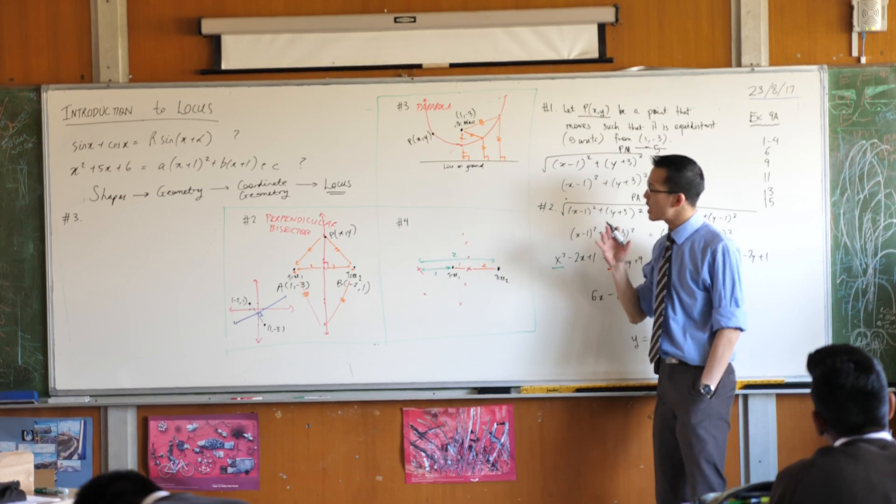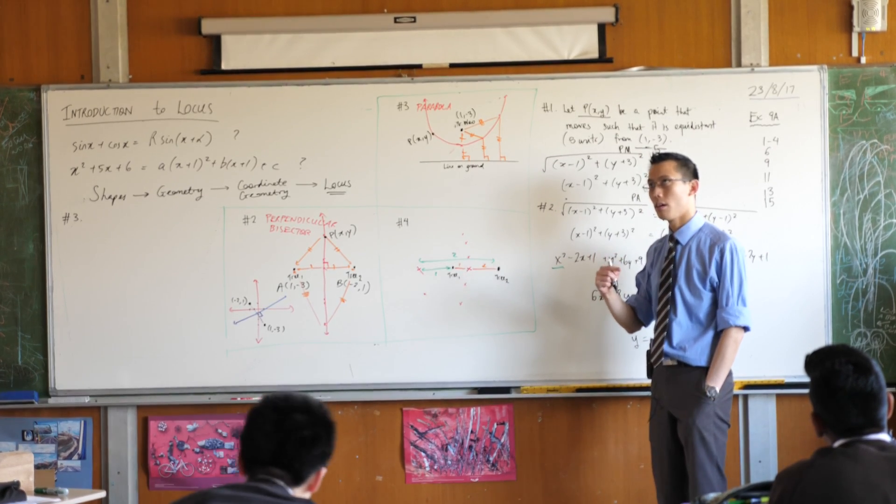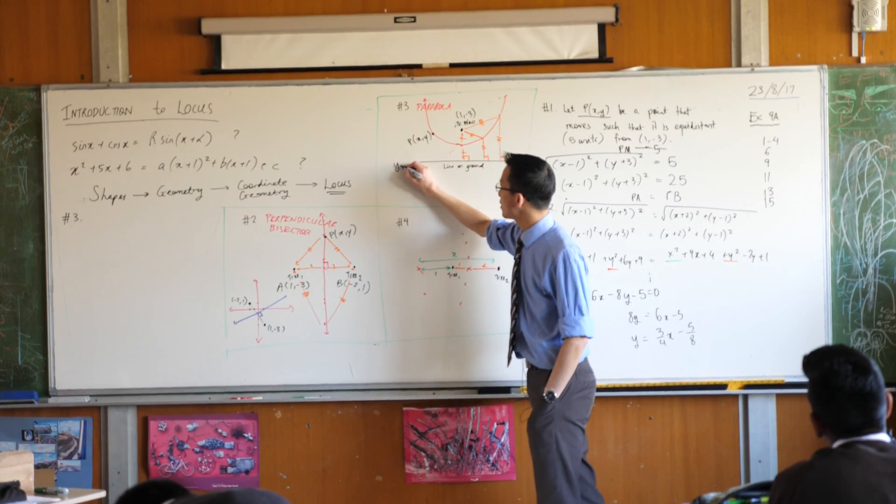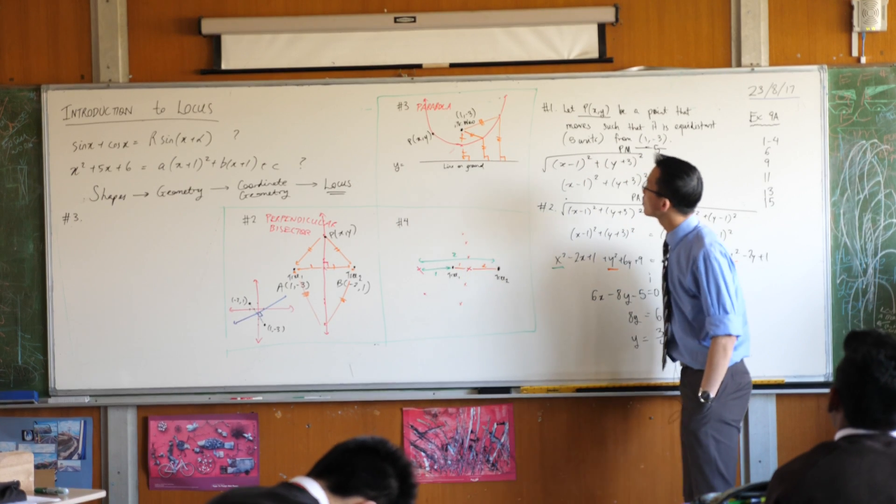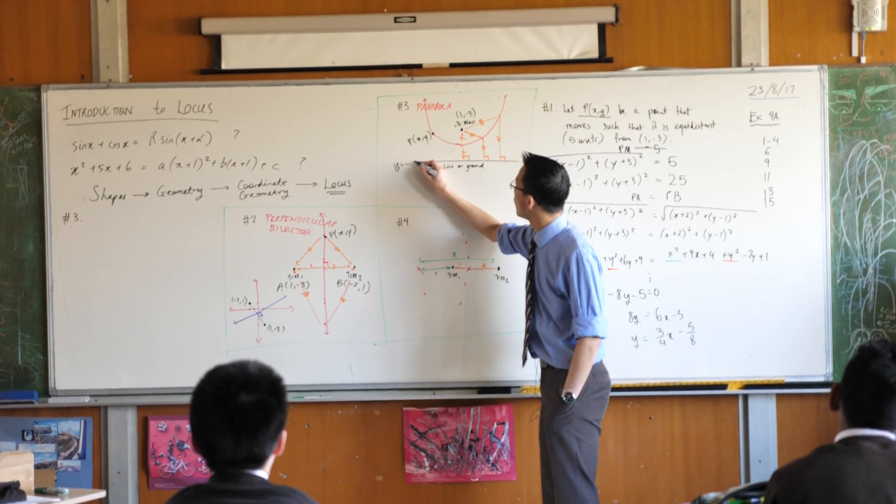Now in order to keep this a little bit simple, negative 3, where's that? Okay sure, let's make this equation here a horizontal line. I'm going to place it at negative 5.